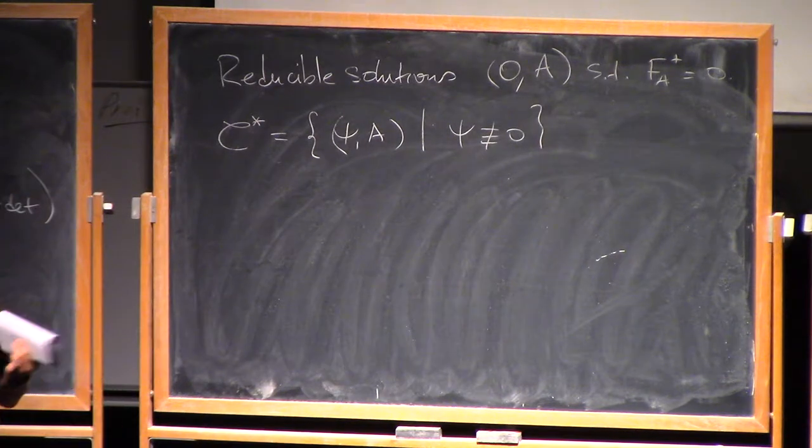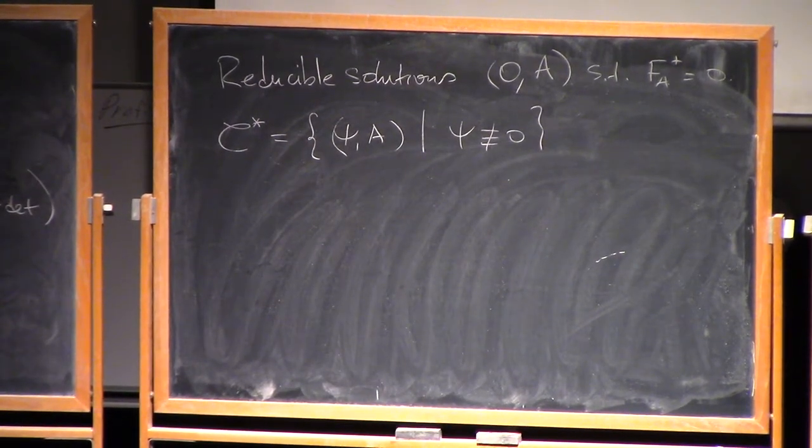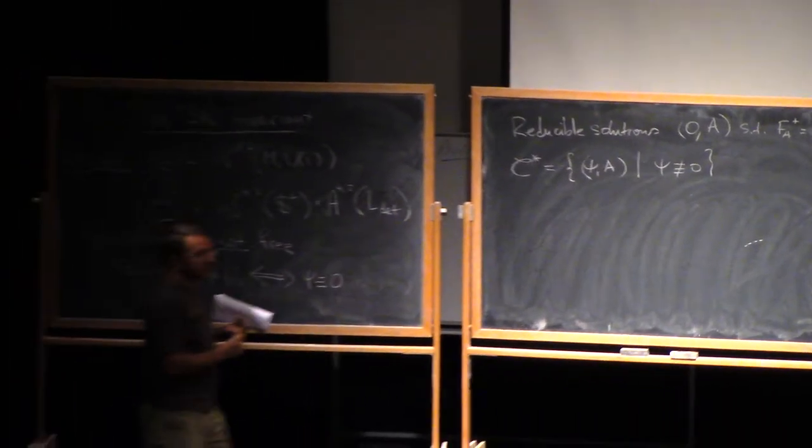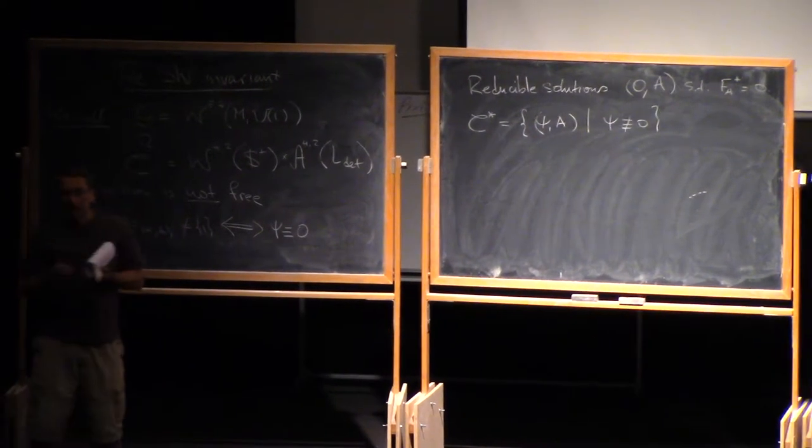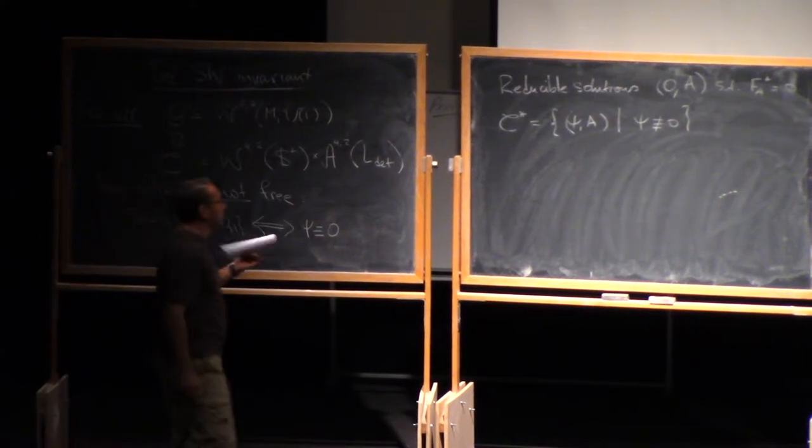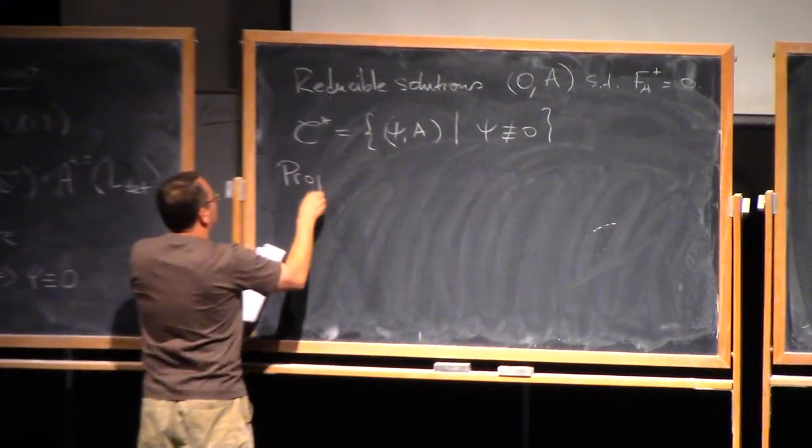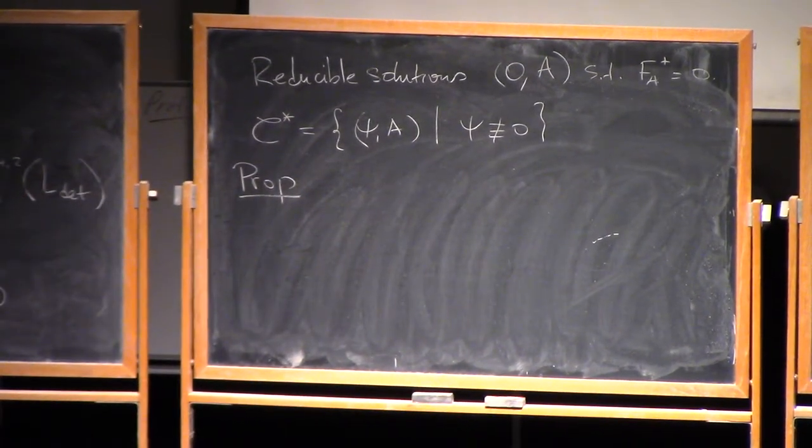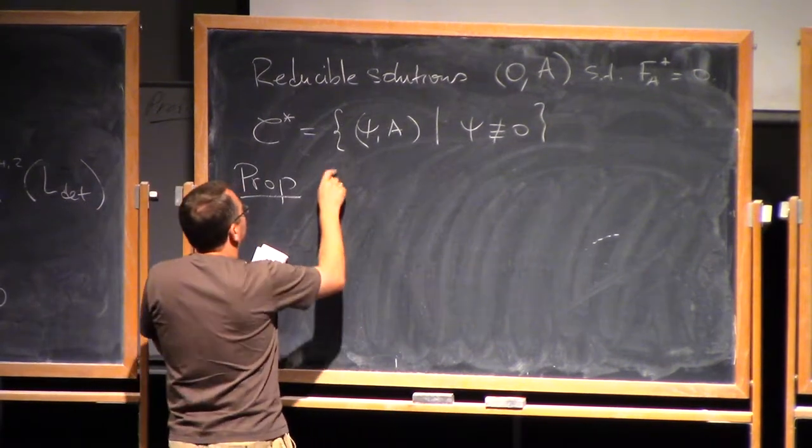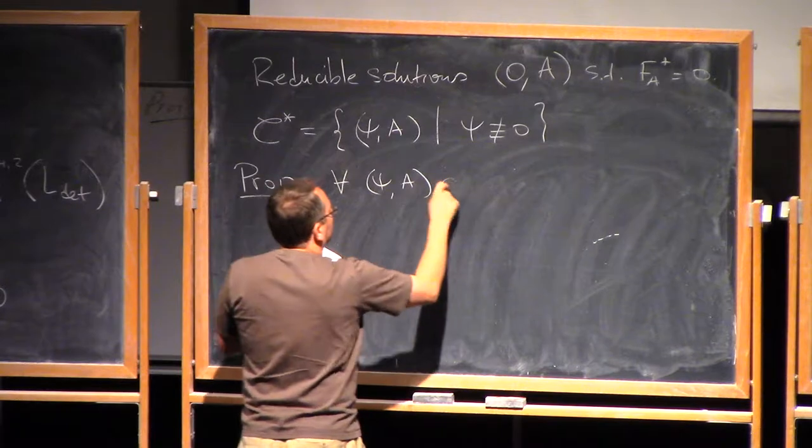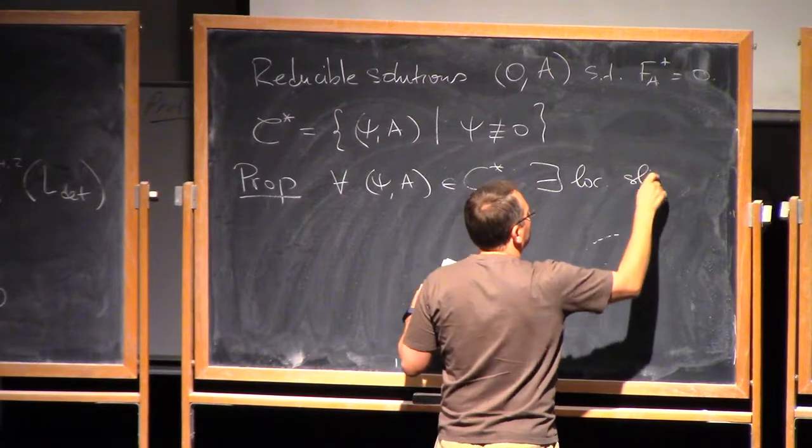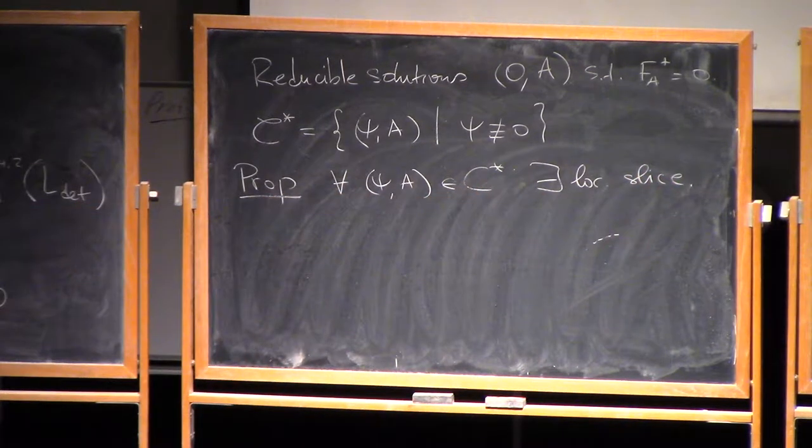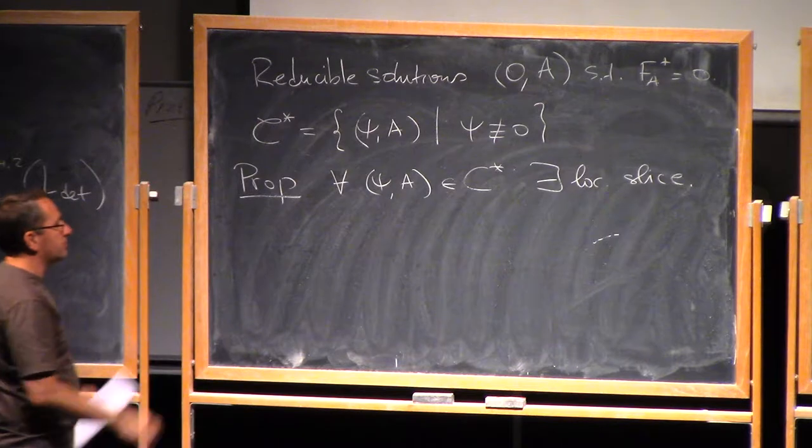Recall from the last lecture, we wanted the moduli space to be compact, and we proved this last time. We wanted this to be a manifold, which required local slices at each point, and we wanted an orientation. The claim is that for any (ψ,A) in C*, there exists a local slice through this point.